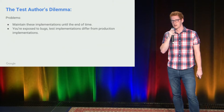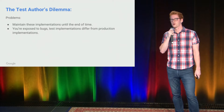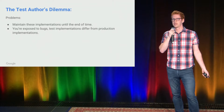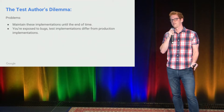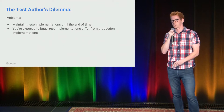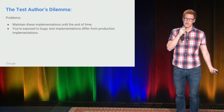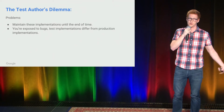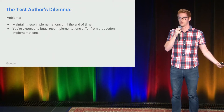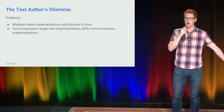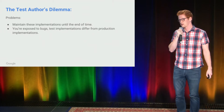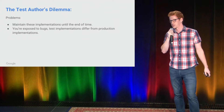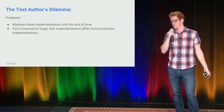This also introduces a class of bugs where your server implementations of other teams' servers is different from what's running in production. So you can pass all your tests, and then once you go to prod, it turns out there was a bug in your fake, mock, or stub, and you've caused a production outage. That's a really negative thing.